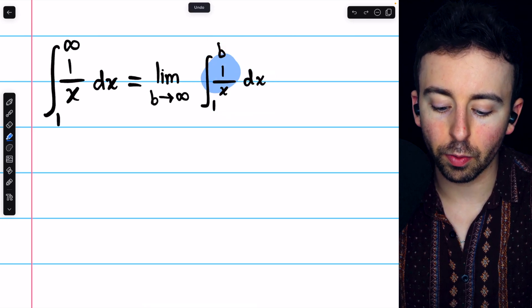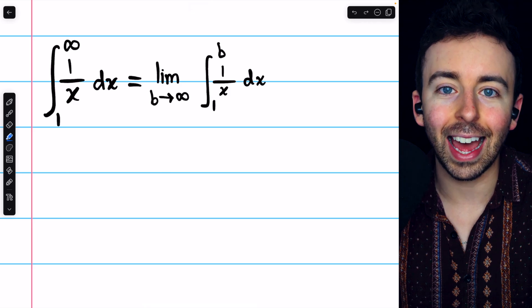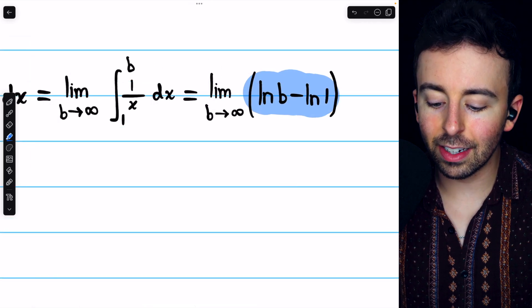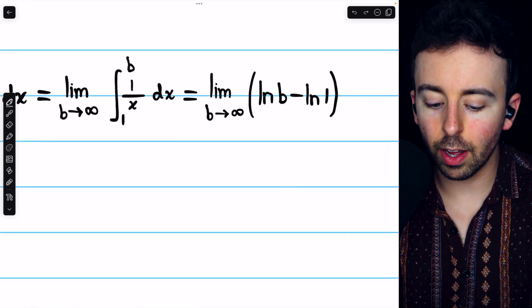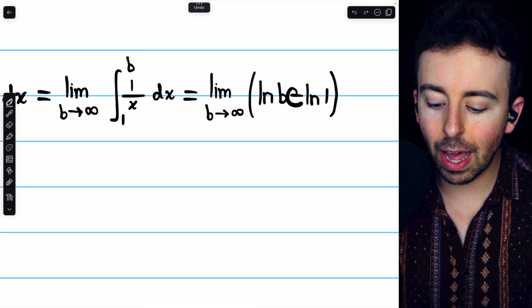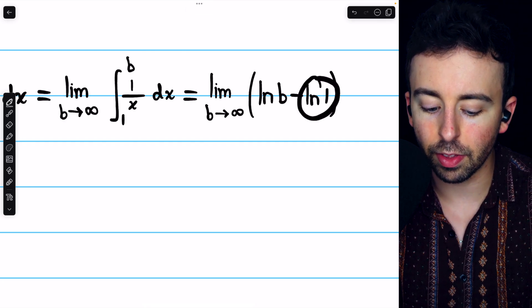The integral of 1 over x, of course, is ln x. So here's that integral. We have the natural log of the upper bound minus the natural log of the lower bound.